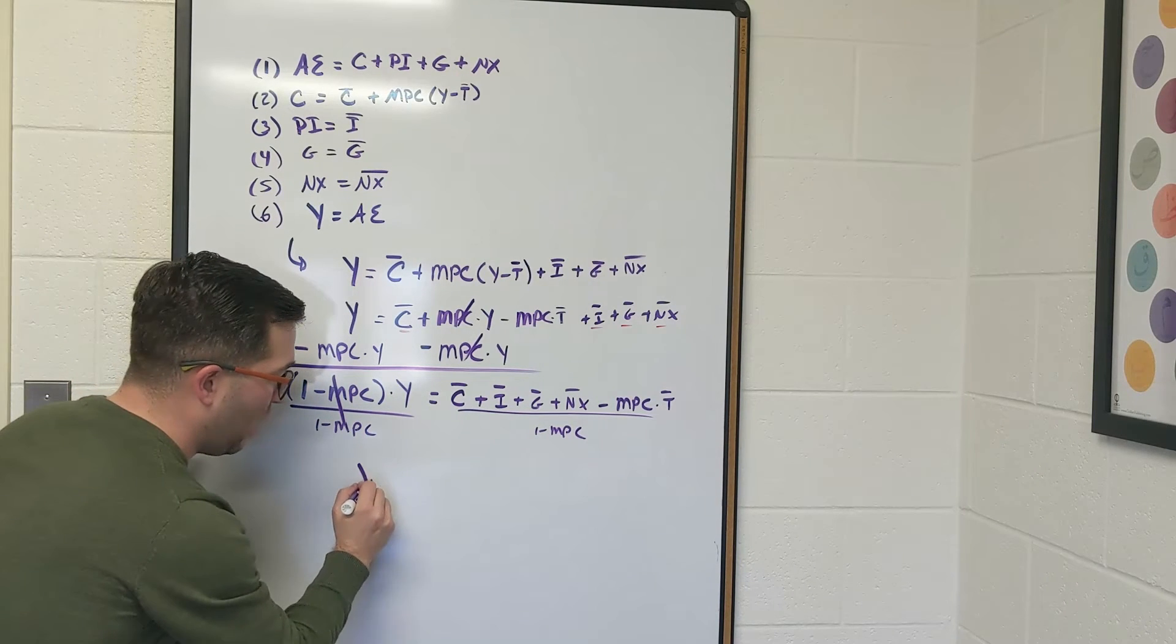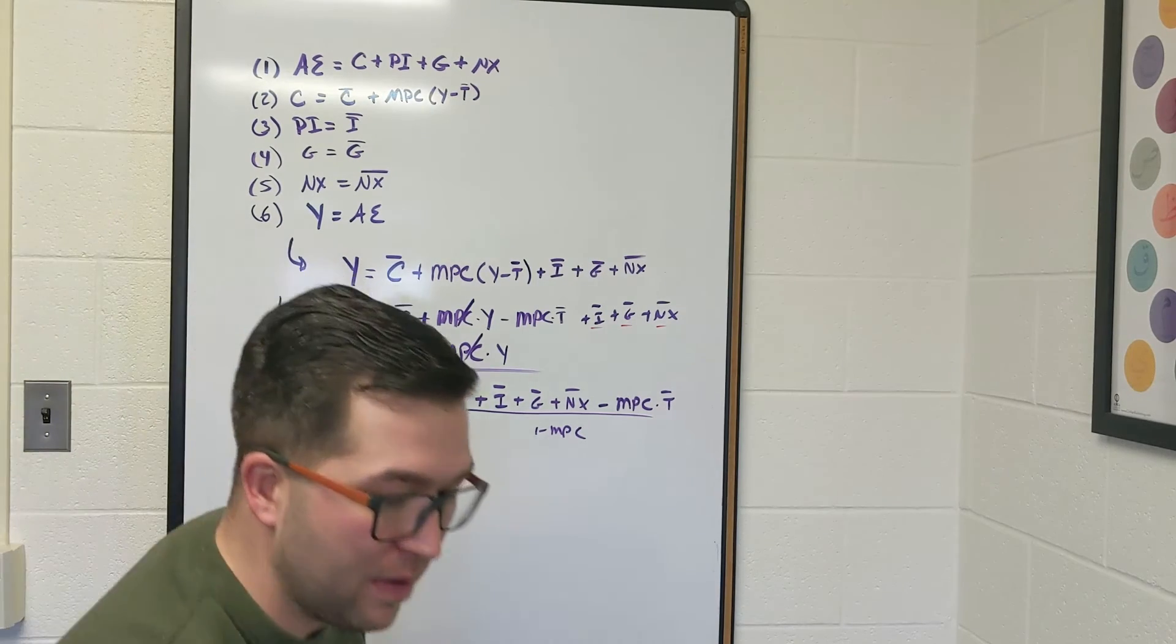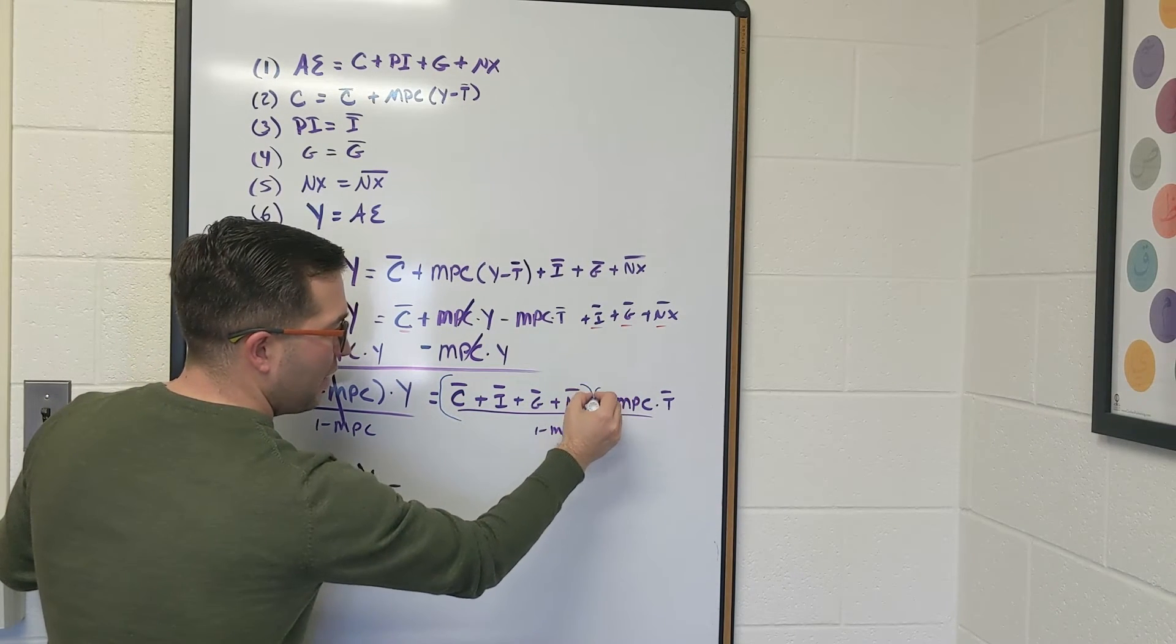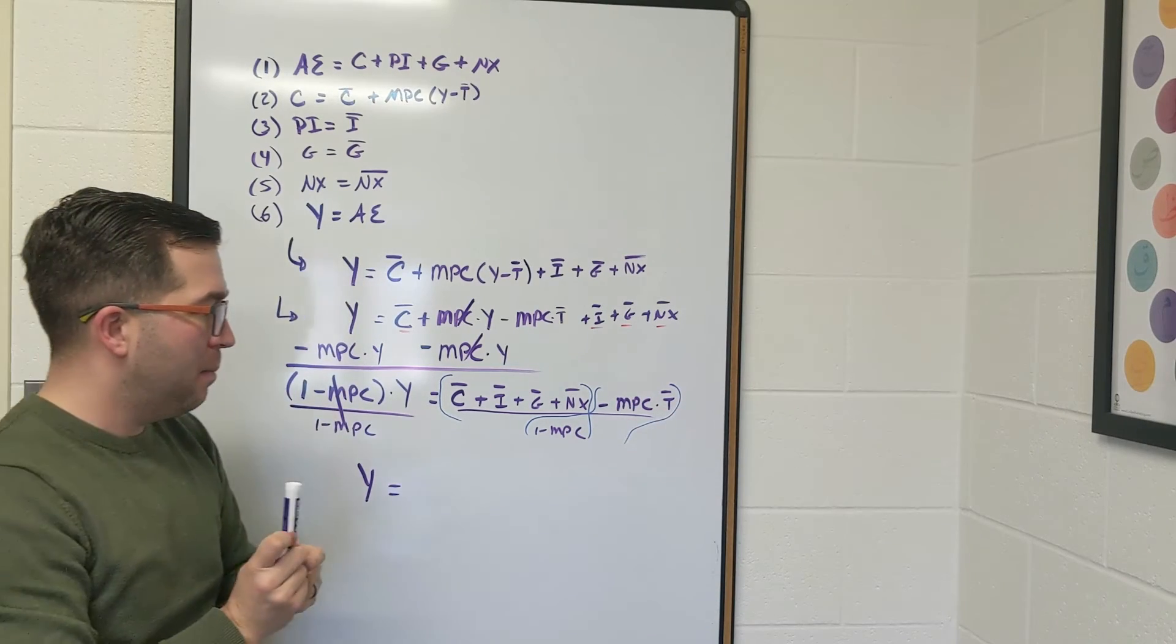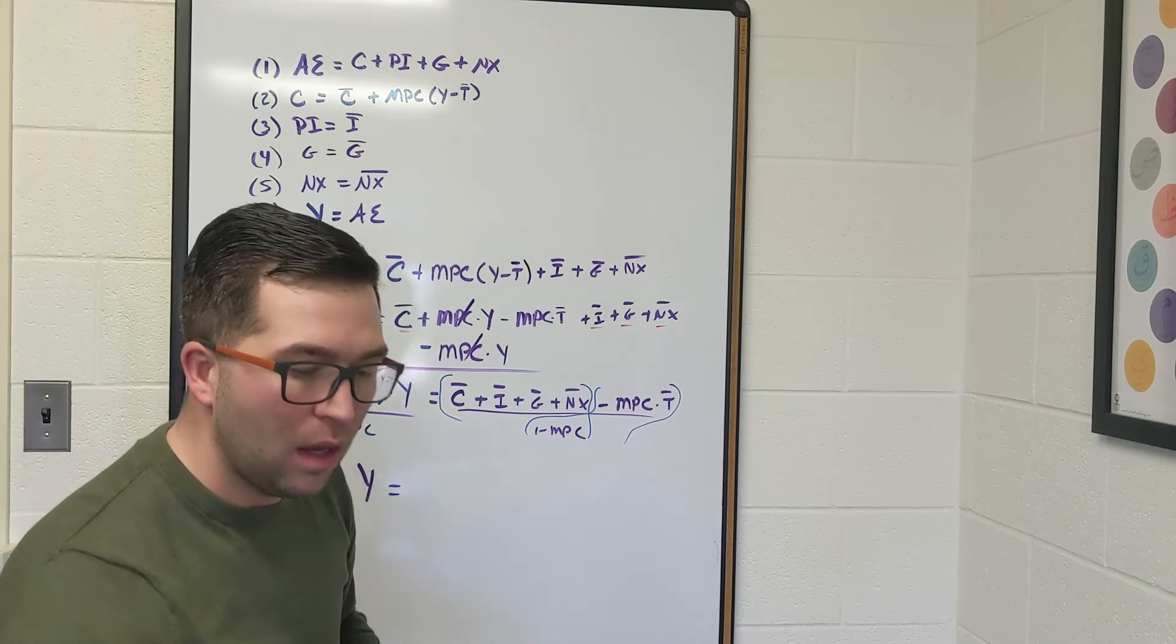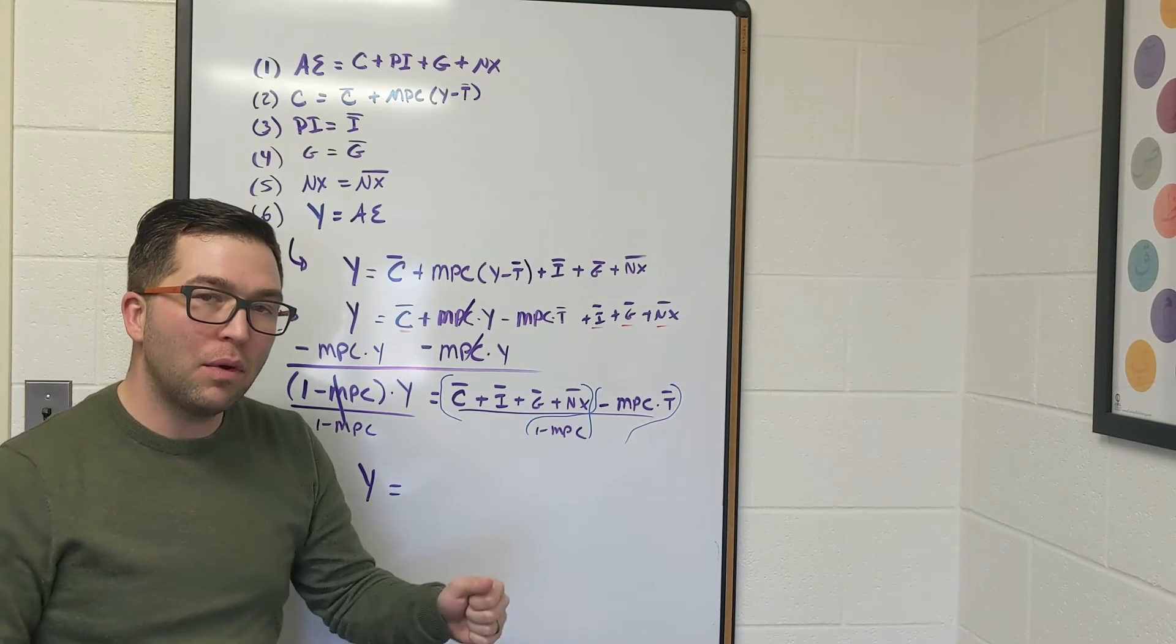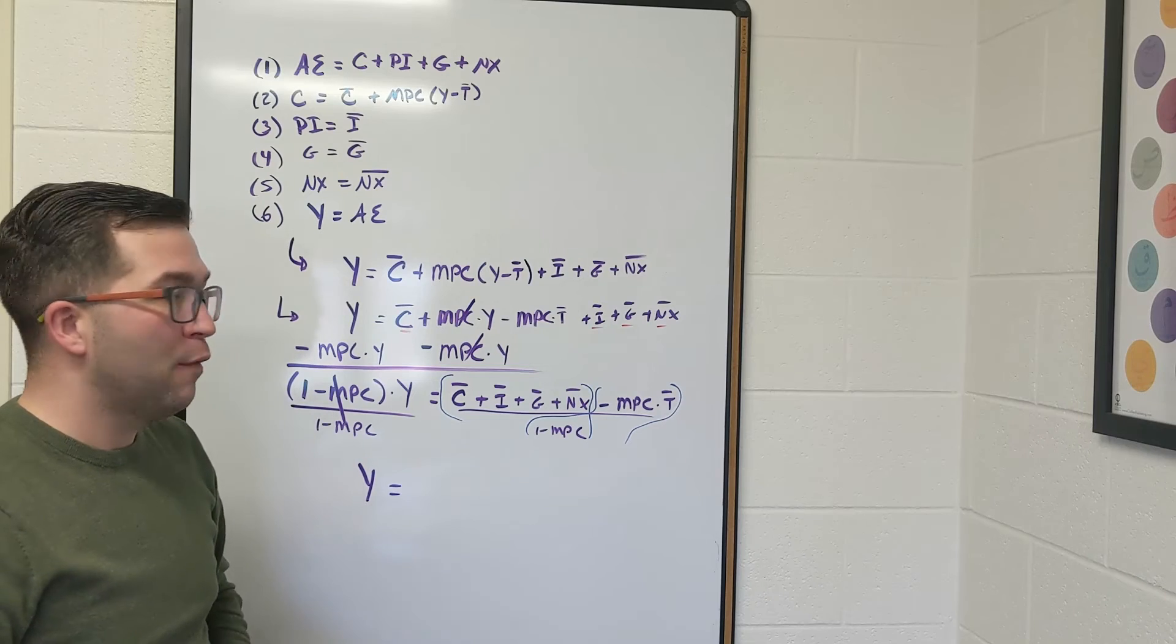And so we're going to get Y equals... I'm going to make this a little different. I'm going to separate this part and then separate this part. Because we have a common denominator, we can split that up. I'm also going to say that instead of dividing by 1 minus MPC, we can multiply by 1 over 1 minus MPC.